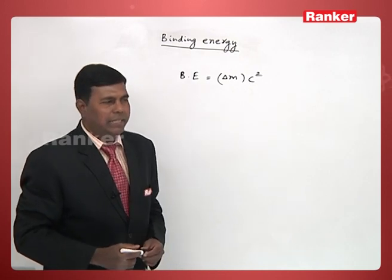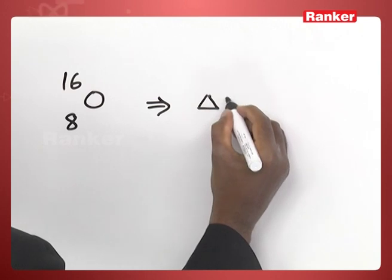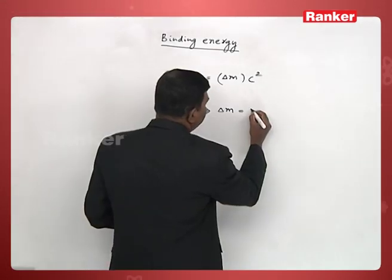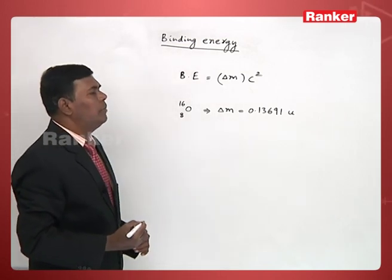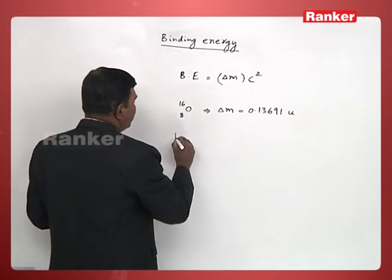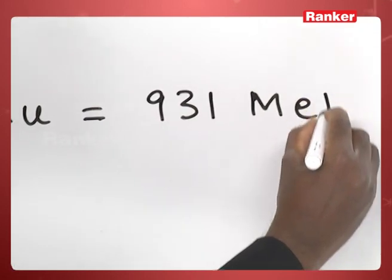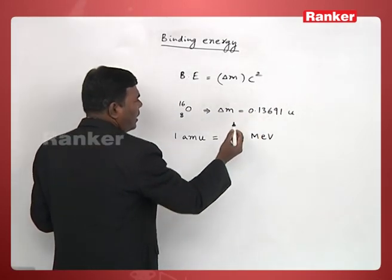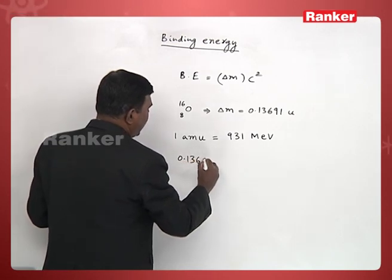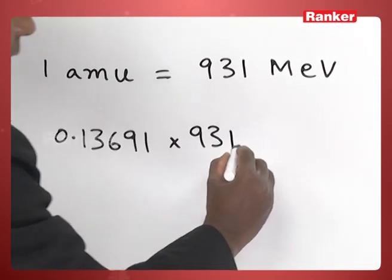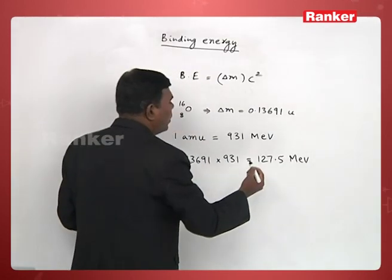For example, in the earlier case we calculated the mass defect of the oxygen nucleus to be 0.13691 atomic mass units. Generally, one atomic mass unit when converted into energy is about 931 million electron volts (MeV). So converting this mass defect into energy: 0.13691 multiplied by 931 gives approximately 127.5 MeV.